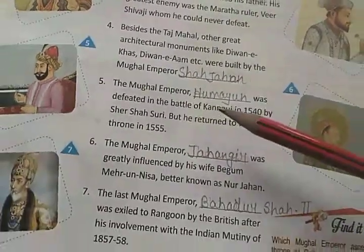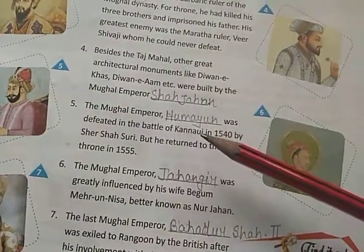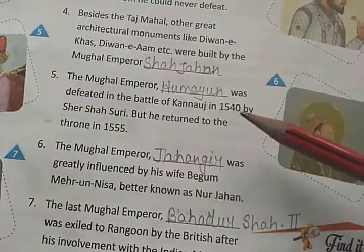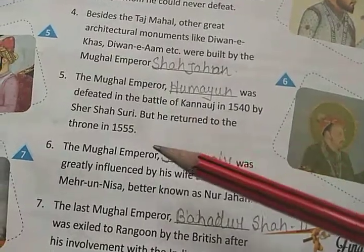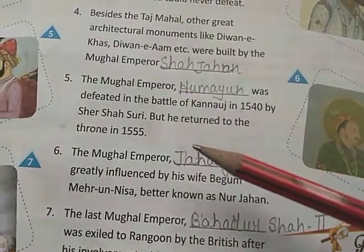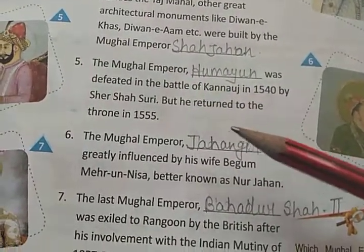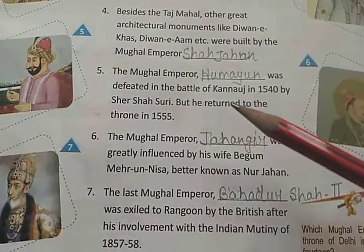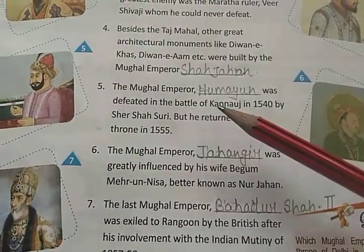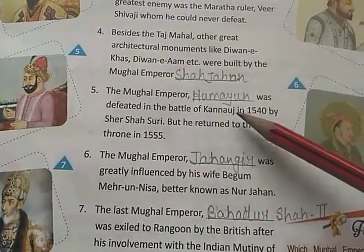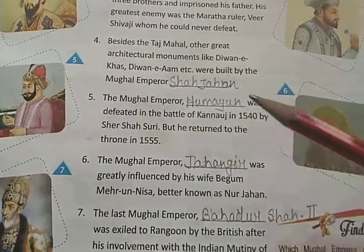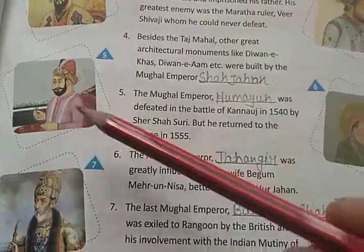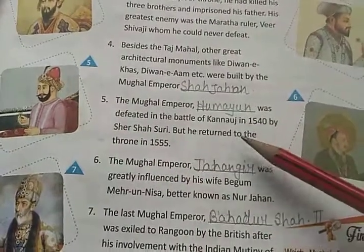Number 5: Mughal Emperor Humayun was defeated in the Battle of Kanauj in 1540 by Sher Shah Suri. But he returned to the throne in 1555. Lekin phir bhi unhone 1555 mein wapas apne singhasan pe aa gaye the.